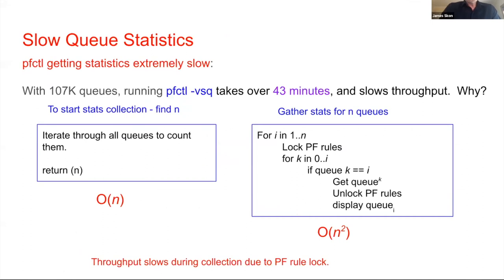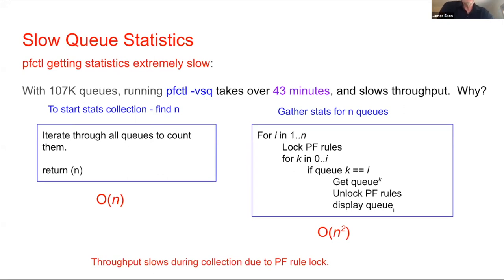If you're using this in real life you'll want to collect statistics to dynamically see which queues are pushing how much data. The typical way is the PFCTL -vsq command. With a hundred or a thousand queues it returns almost instantly, but with 107,000 queues it literally took 43 minutes to gather statistics — which is ridiculous. Making it even worse, while gathering those statistics for 43 minutes, system throughput dropped by five to ten times.